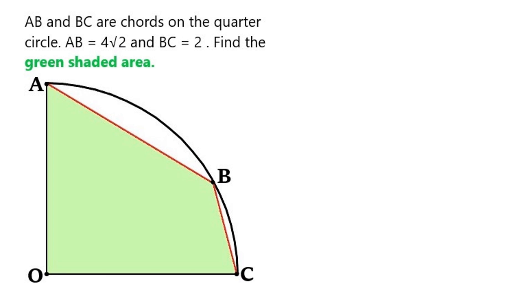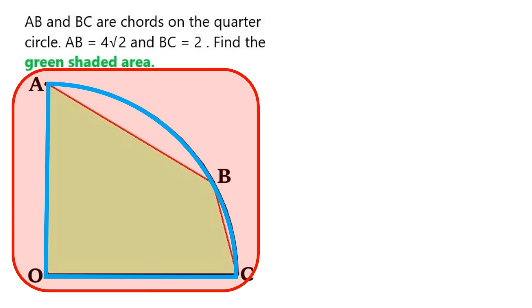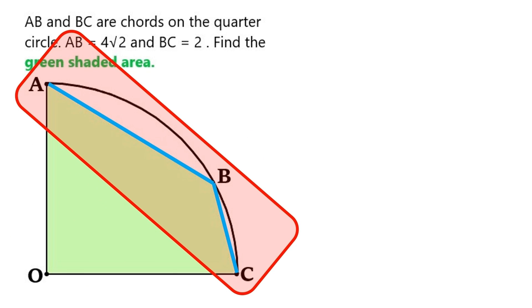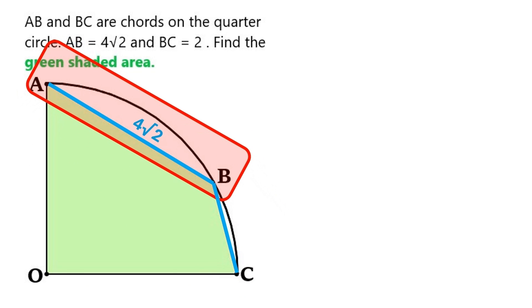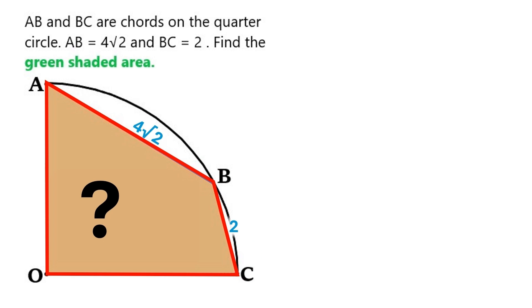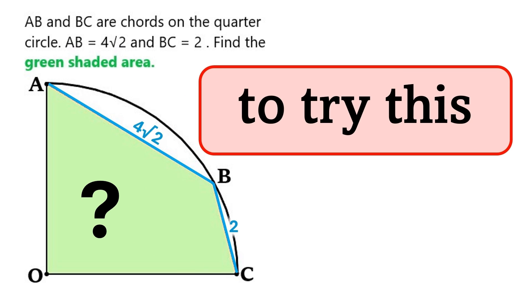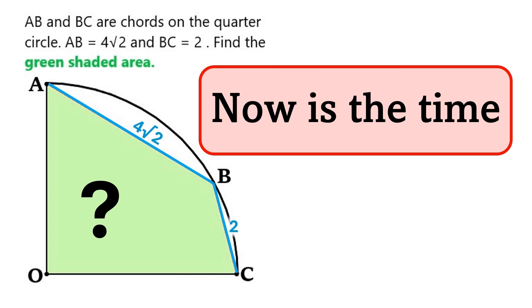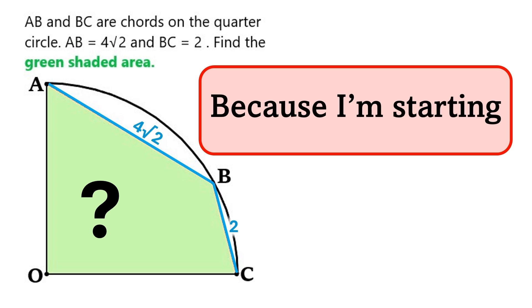In this fun geometry problem, we've got this quarter circle and it's got these two chords inside it. This chord AB has a length of 4 times root 2, and this chord BC has a length of 2. We need to find the area of this big quadrilateral region. If you want to try this on your own, now is the time to pause the video, because I'm starting to solve it right now.